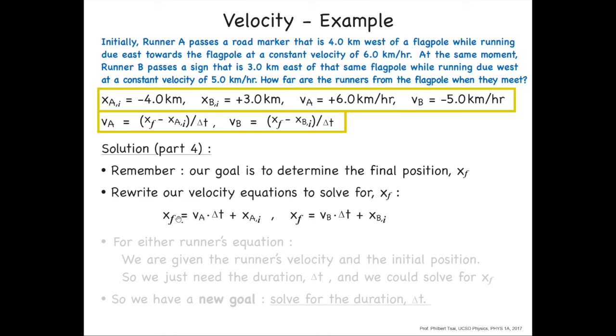So we'll just do a little bit of manipulation here. We take, let's take this first equation, we multiply both sides by delta t so that I get va times delta t is equal to xf minus xai. And then I'm going to add xai to both sides, and that cancels this, and I get va delta t plus xai. Similarly for the second equation. Again, to isolate x final in this equation, I multiply both sides by delta t so that I get vb delta t. And then I add the initial position for runner B. Bring that over to that side.